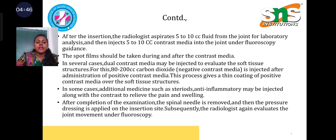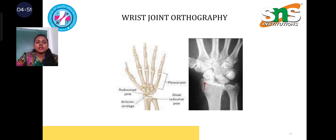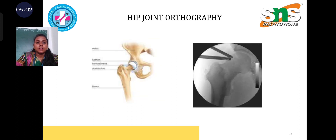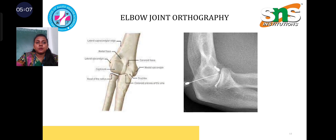Subsequently, the radiologist again evaluates the joint movement under fluoroscopy. This is how a wrist joint orthography looks like. This is how the shoulder joint orthography images look. This is how the hip joint orthography images look. And this is how elbow joint orthography images look.